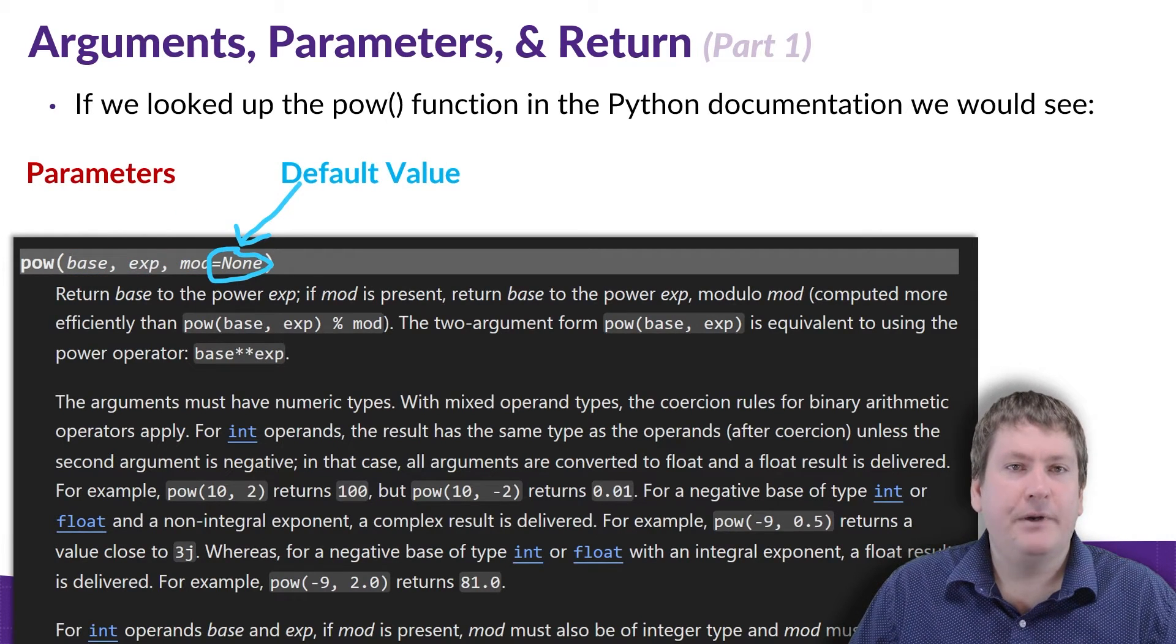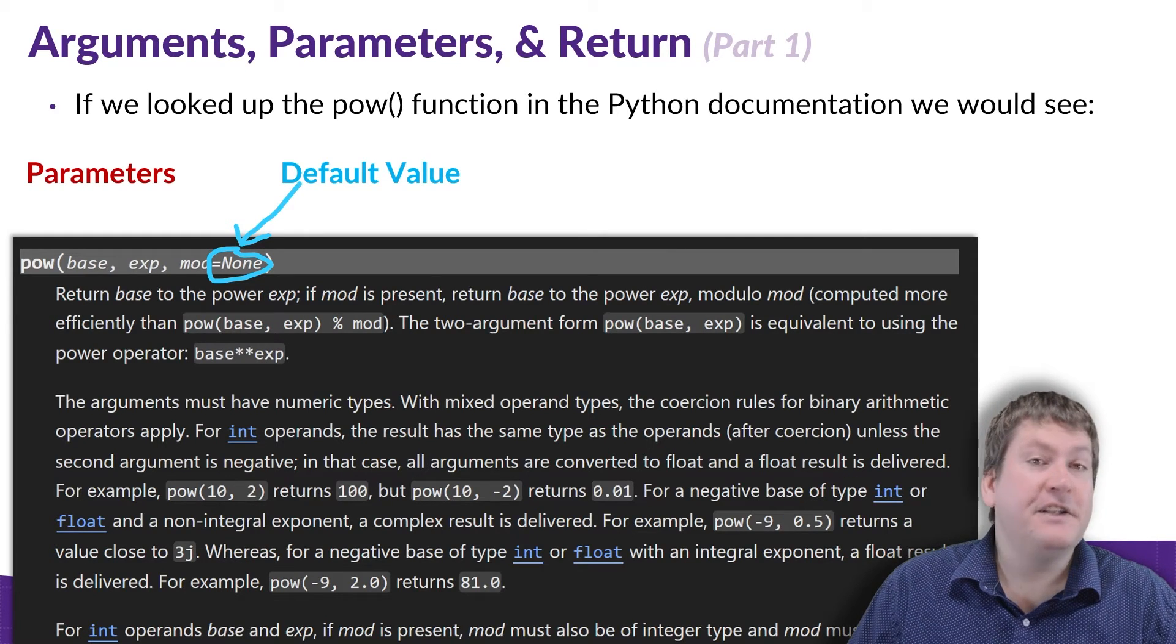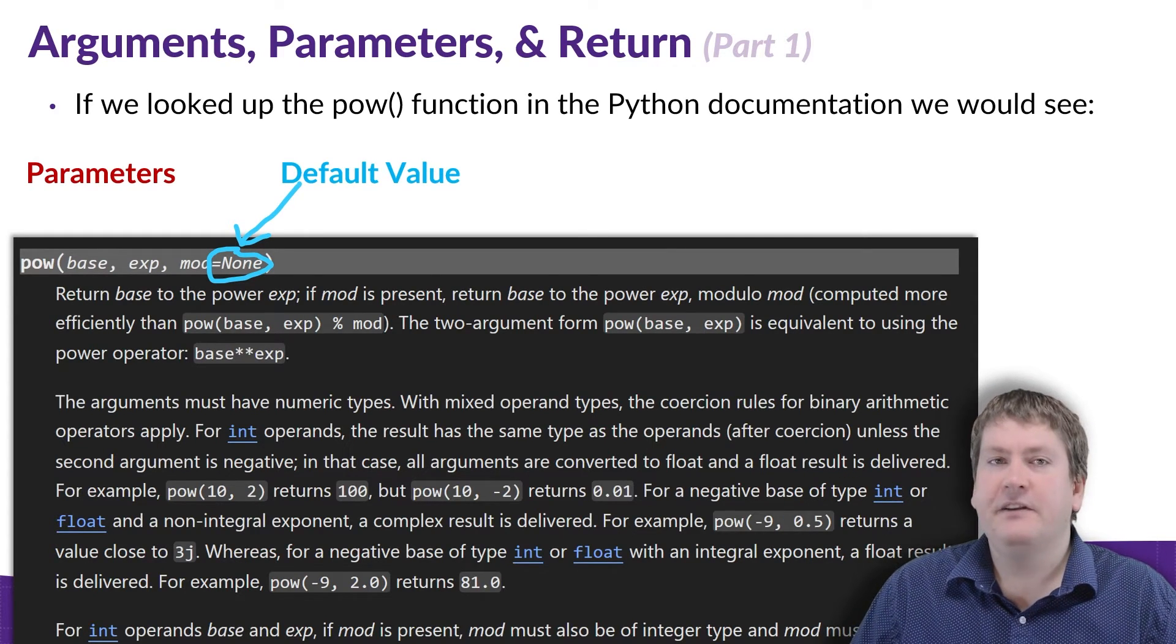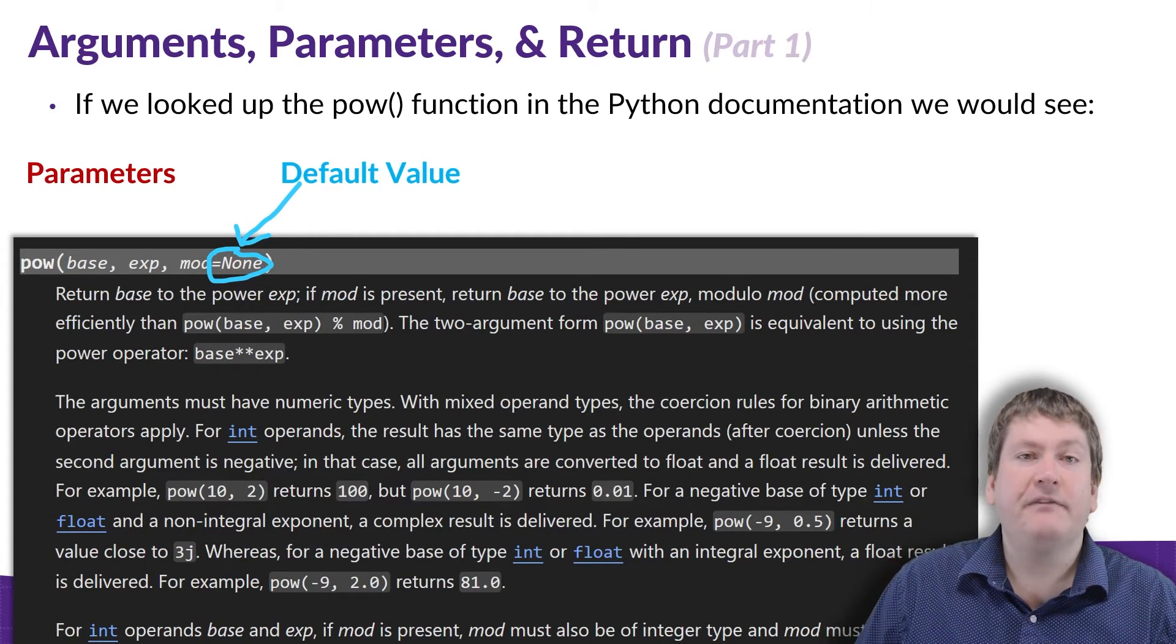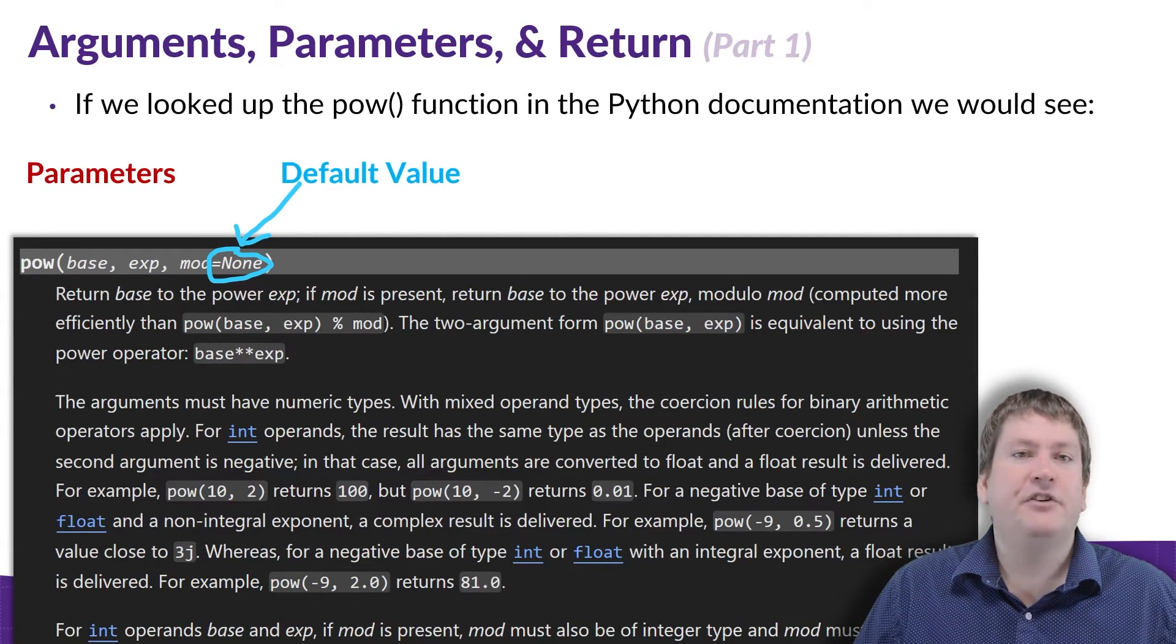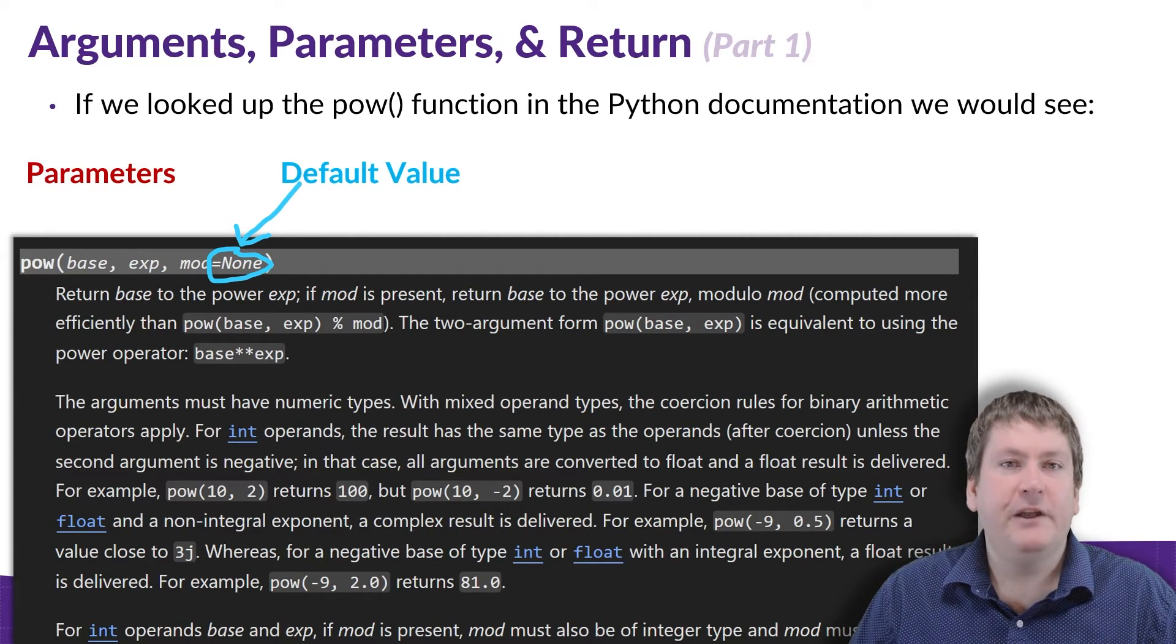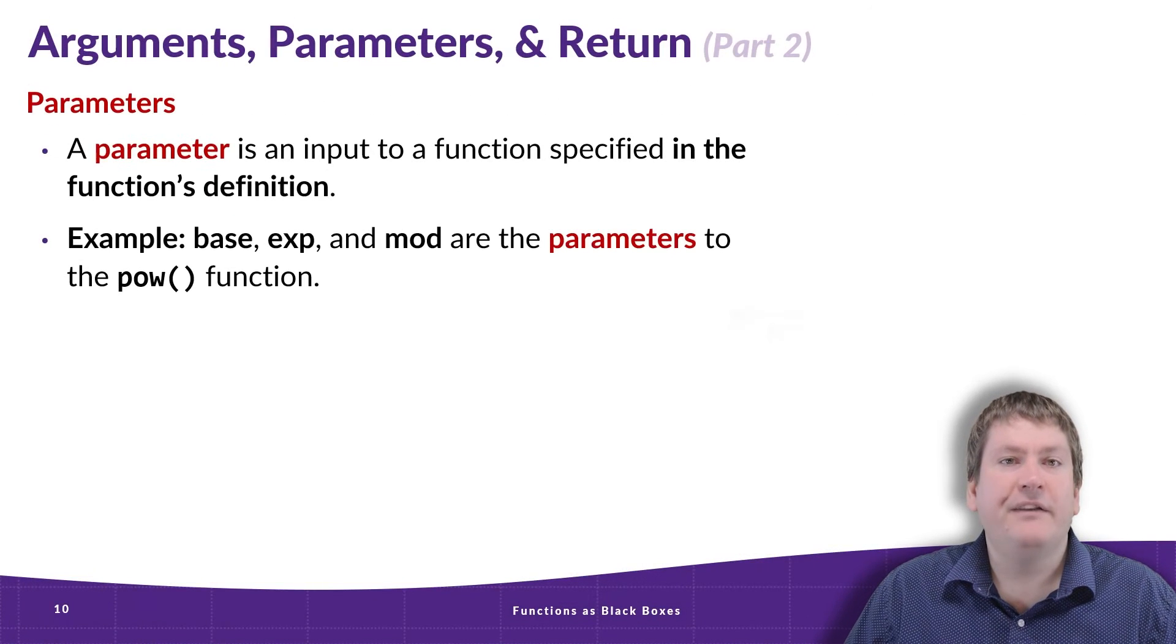Now you may see that there is an extra parameter here that we didn't use. This would be that mod parameter. The reason we didn't have to provide it a value is because it had a default value set. In the documentation, this is represented by that equals None statement, which means that if we don't give mod a value, it's going to default to None. This isn't limited just to None; it could be equals any value and have any default.